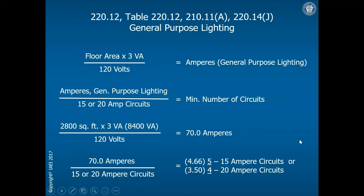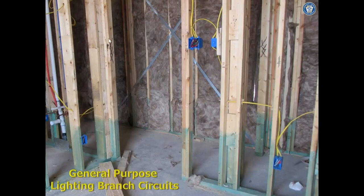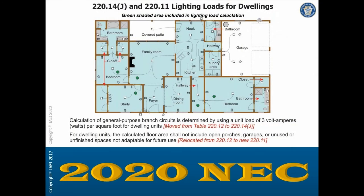This looks great on paper or for a test, but in the real world, a 3,400 square foot house with 2,800 square feet of living space would probably end up with around 10 general lighting circuits. By the time you factor in circuits for various lighting loads, receptacles, dishwashers, and everything else, you'd end up with more than five. Remember, the code is a minimum — the circuits running through bedrooms for lights and switches are your general lighting circuits.